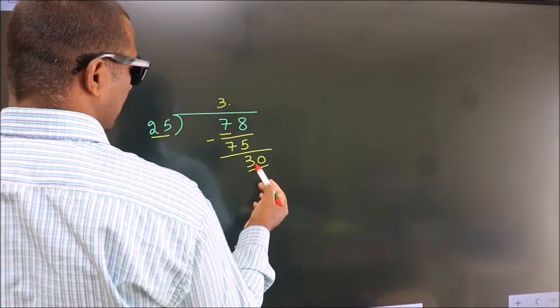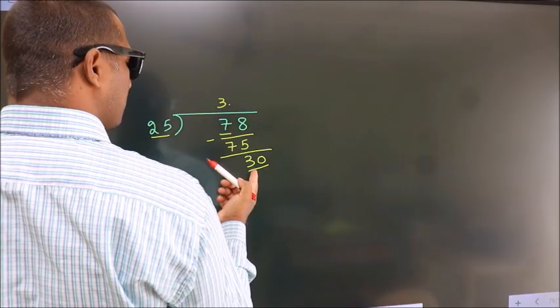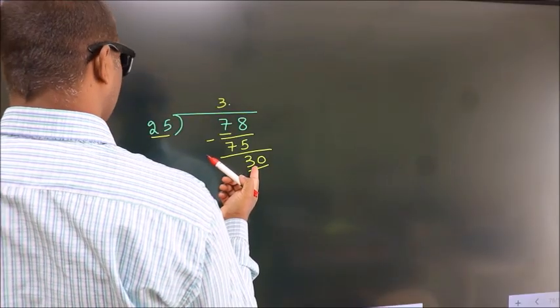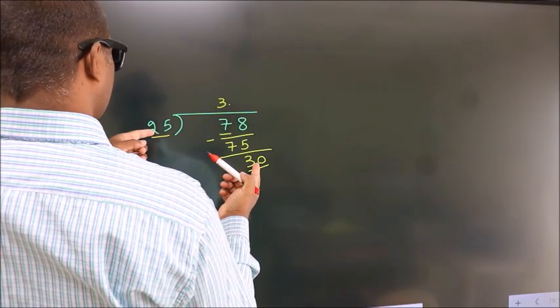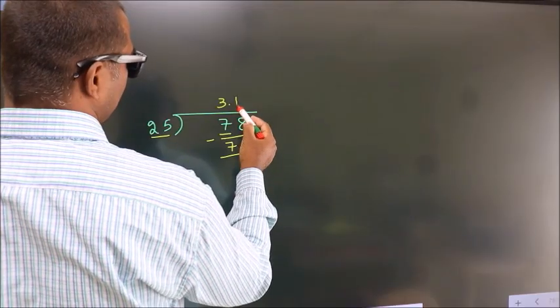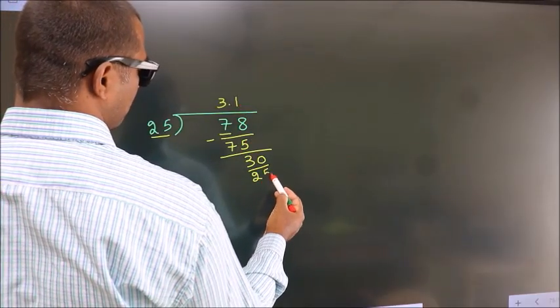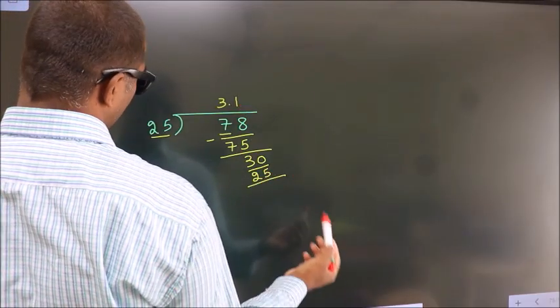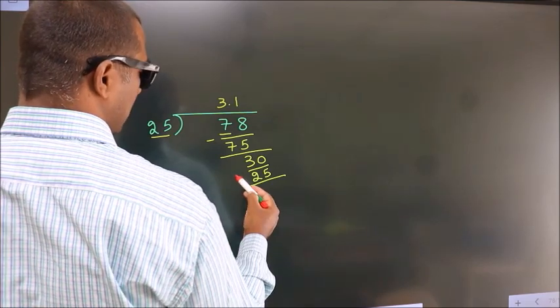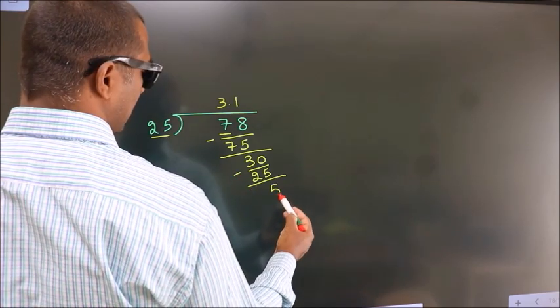So 30. A number close to 30 in the 25 table is 25 once, 25. Now we subtract, we get 5.